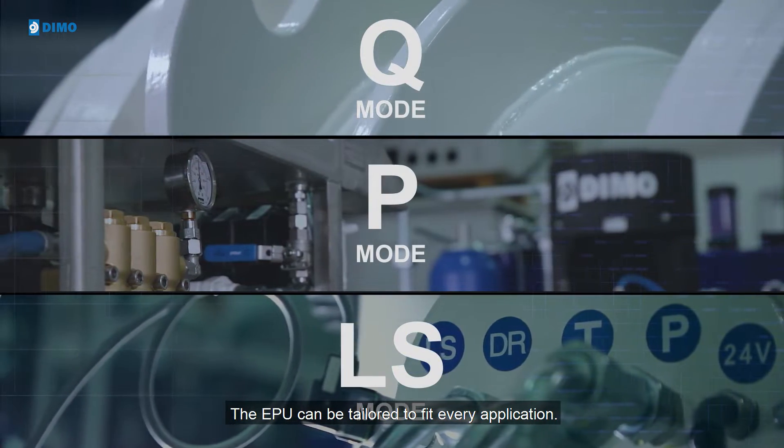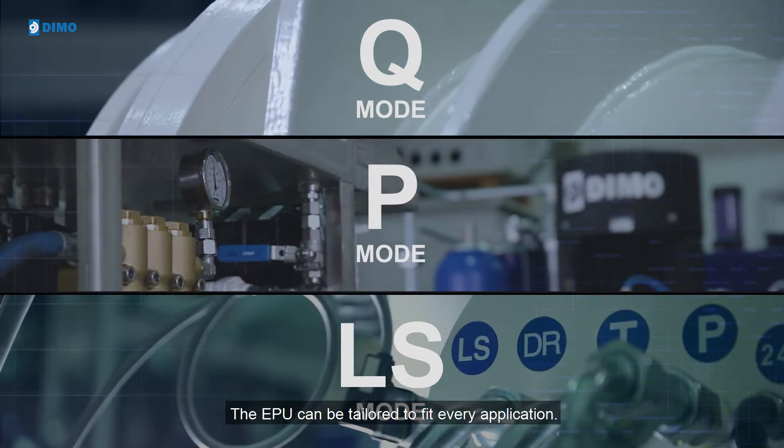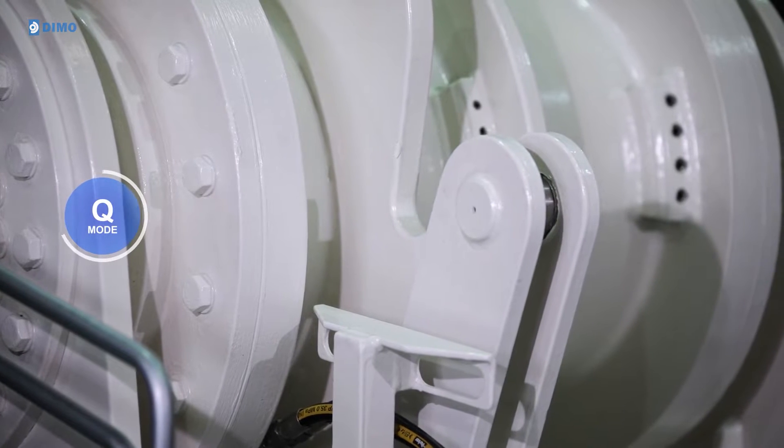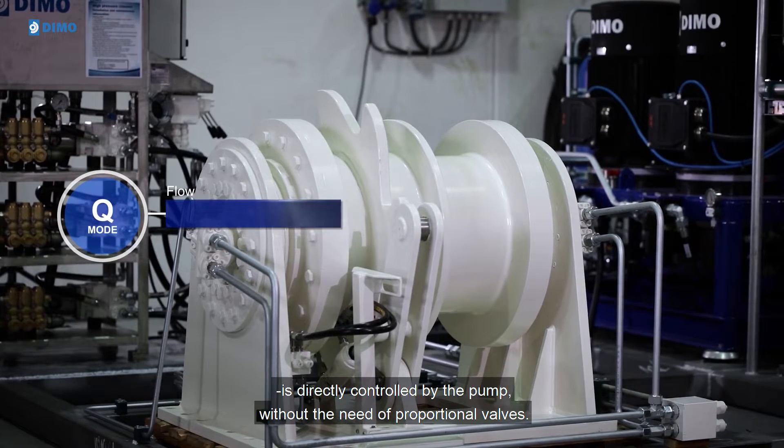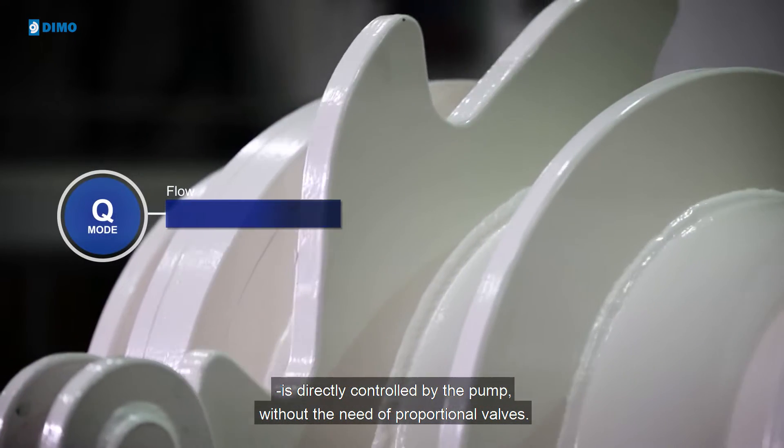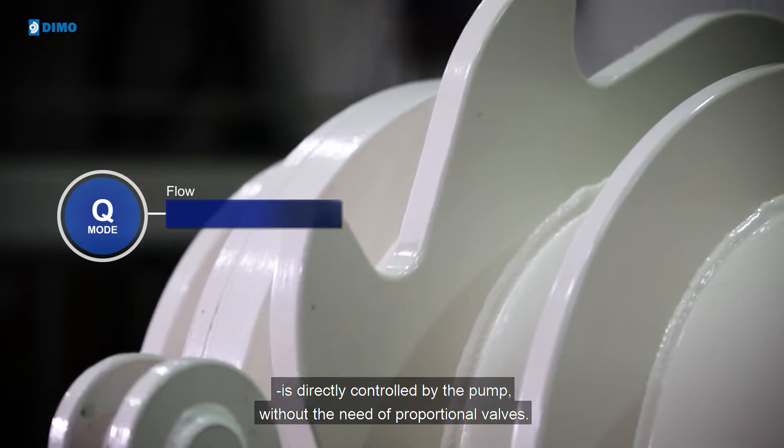The EPU can be tailored to fit every application. In Q mode or Flow mode, the speed of the consumer component is directly controlled by the pump, without the need of proportional valves.